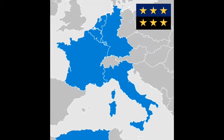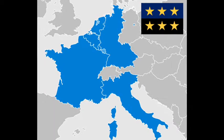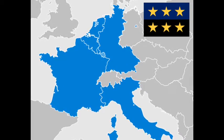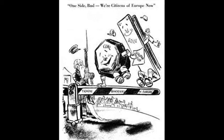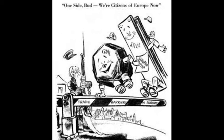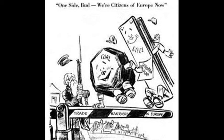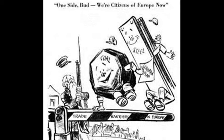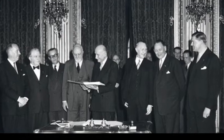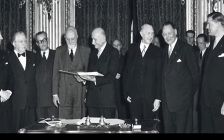The EEC was preceded by the European Coal and Steel Community, which came into force in 1952. The ECSC sought to amalgamate European Coal and Steel production in order to reconstruct Europe after the devastation of the Second World War. The hope was that this would reduce the threat of a future conflict by establishing mutual economic reliance.